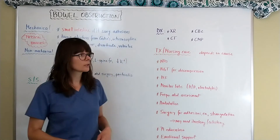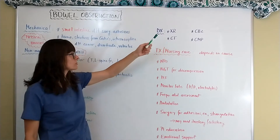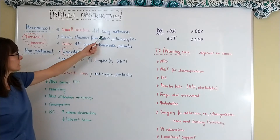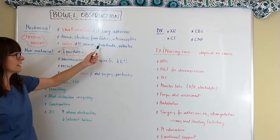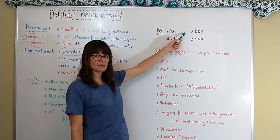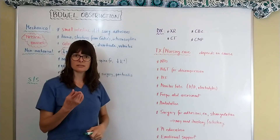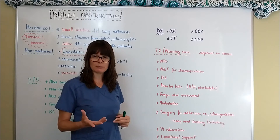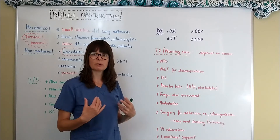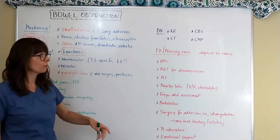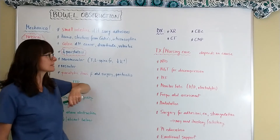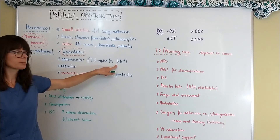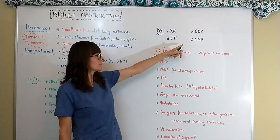Diagnostic tests include an abdominal x-ray or CT scan to identify where the obstruction is occurring and to identify adhesions, neoplasms, or diverticula causing it. We want to look at the CBC — checking the white count for infection and the hemoglobin and hematocrit for possible bleeding, especially with hematemesis, blood in the stool, or a history of Crohn's disease or diverticulitis. We also check the CMP to assess electrolytes, since hypokalemia can cause bowel obstruction.